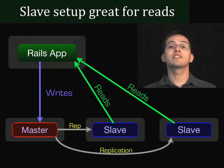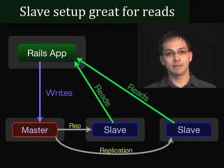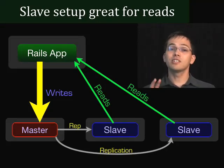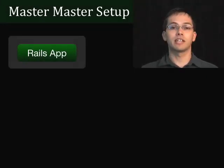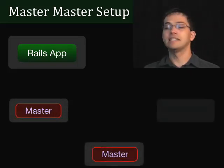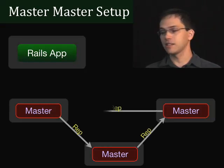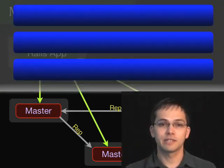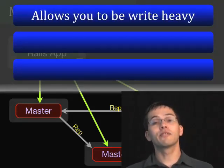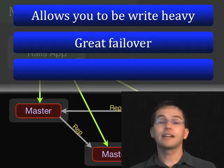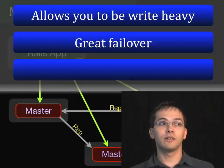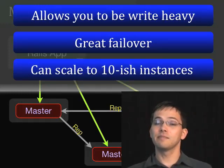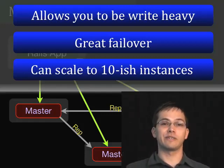In our previous screencast, we talked about master-slave replication, which is great if your application is read-heavy. But what happens when your application is write-heavy and your single master database can't handle all the writes? The first option to scale your writes is Master-Master Replication, where we have multiple master databases. Replication chains through all of them, and our Rails app can write or read to any of them. This really allows you to be write-heavy. It's also great for failover — if one master goes down, we can just point to the other two without much reconfiguration. Master-Master Replication can scale to about 10 instances before replication really starts to slow down.